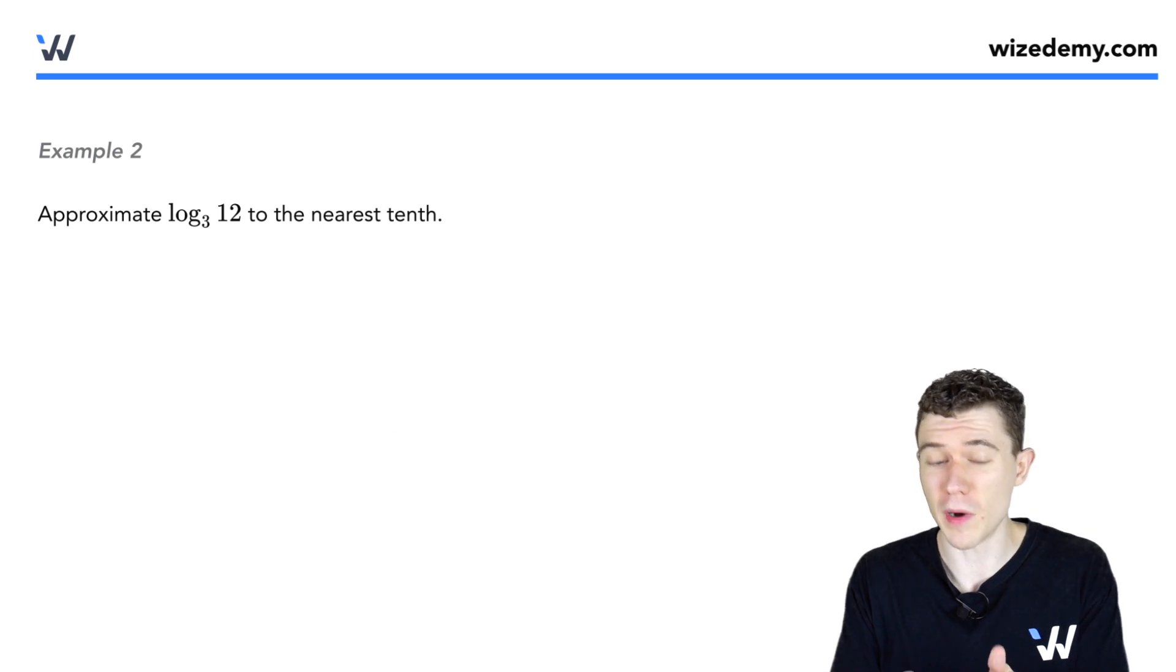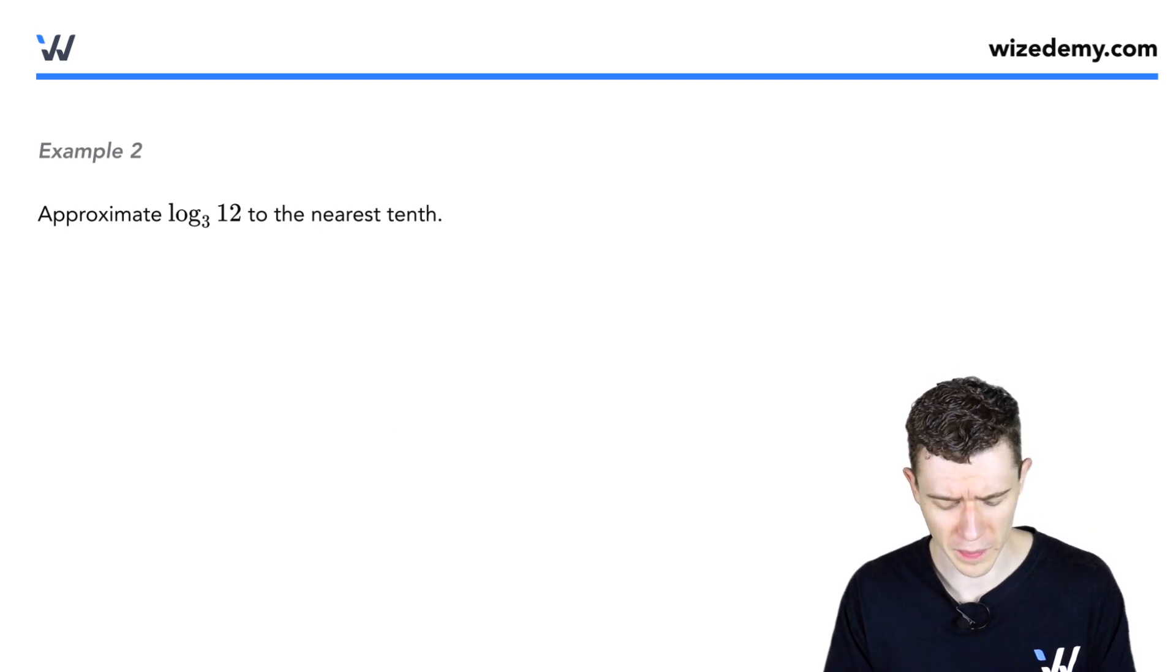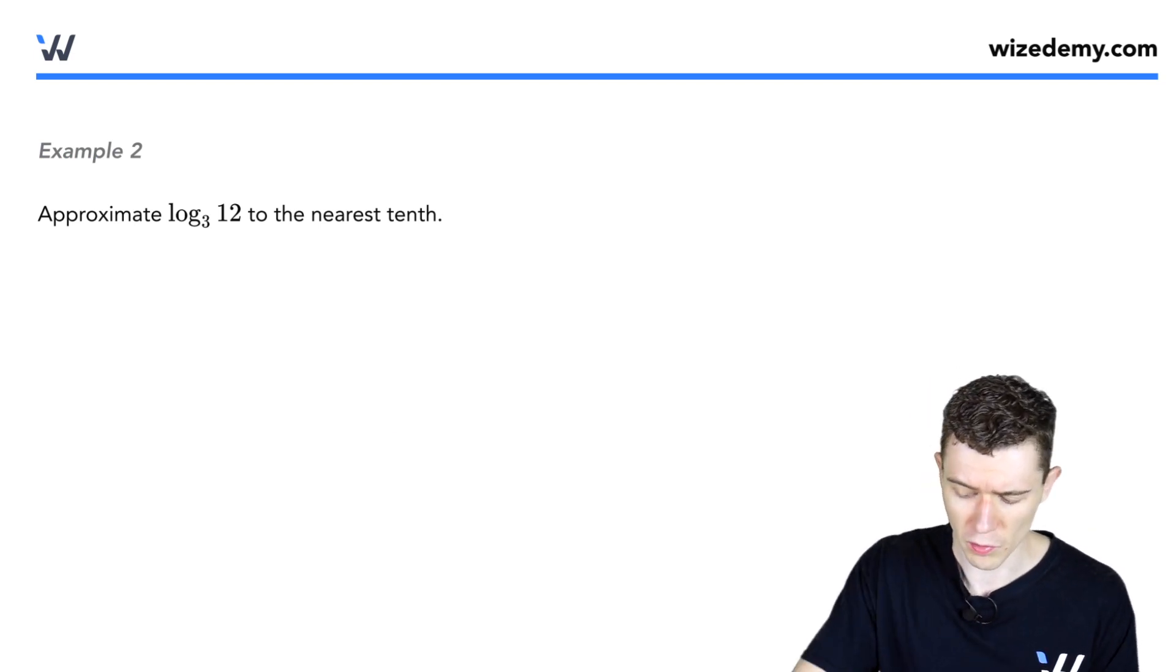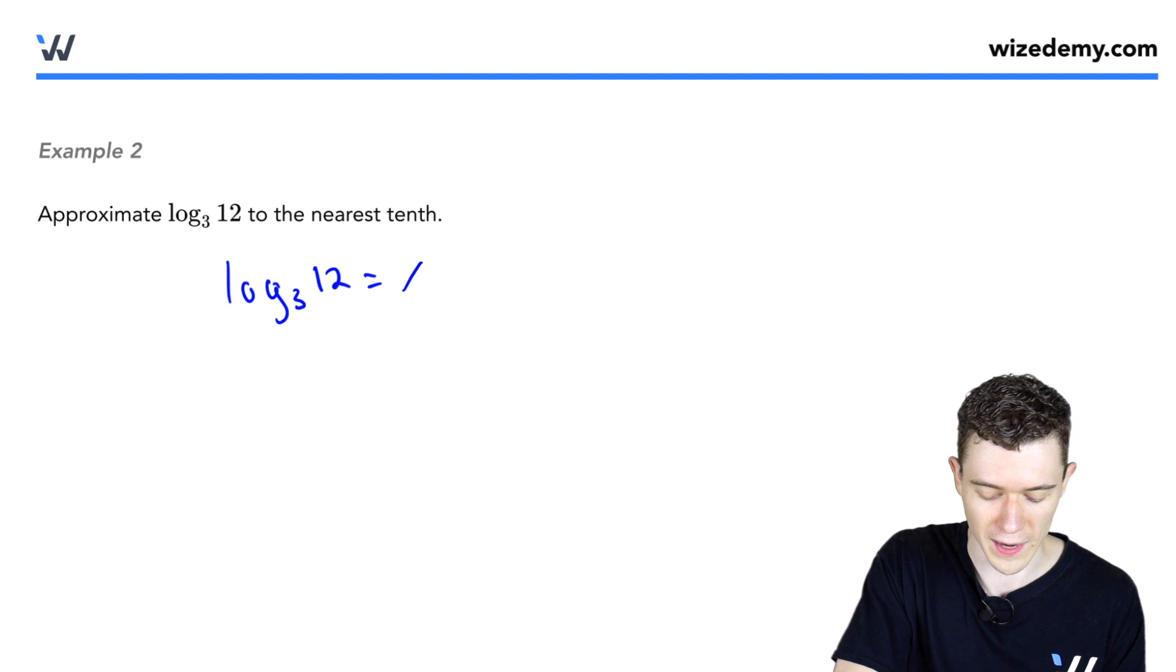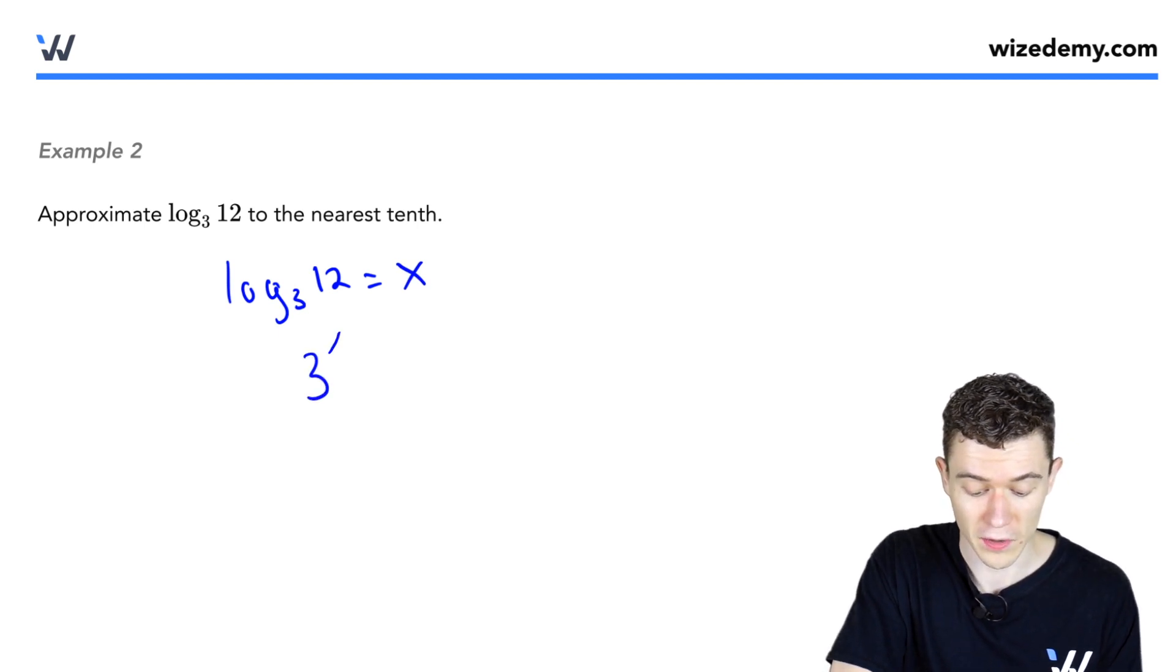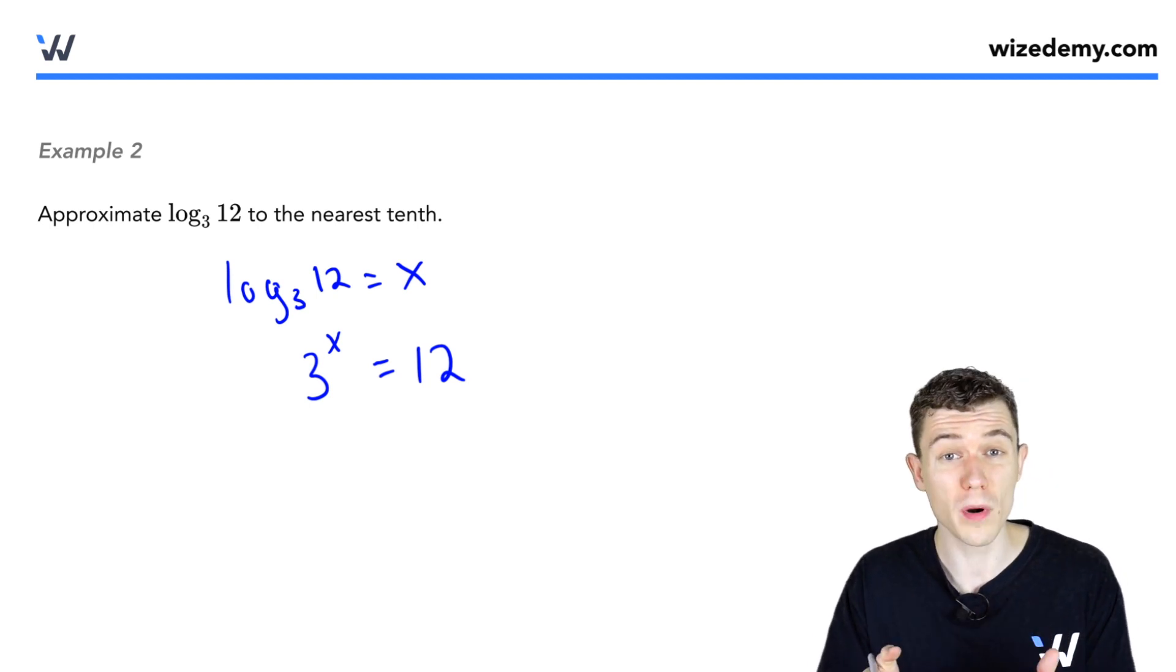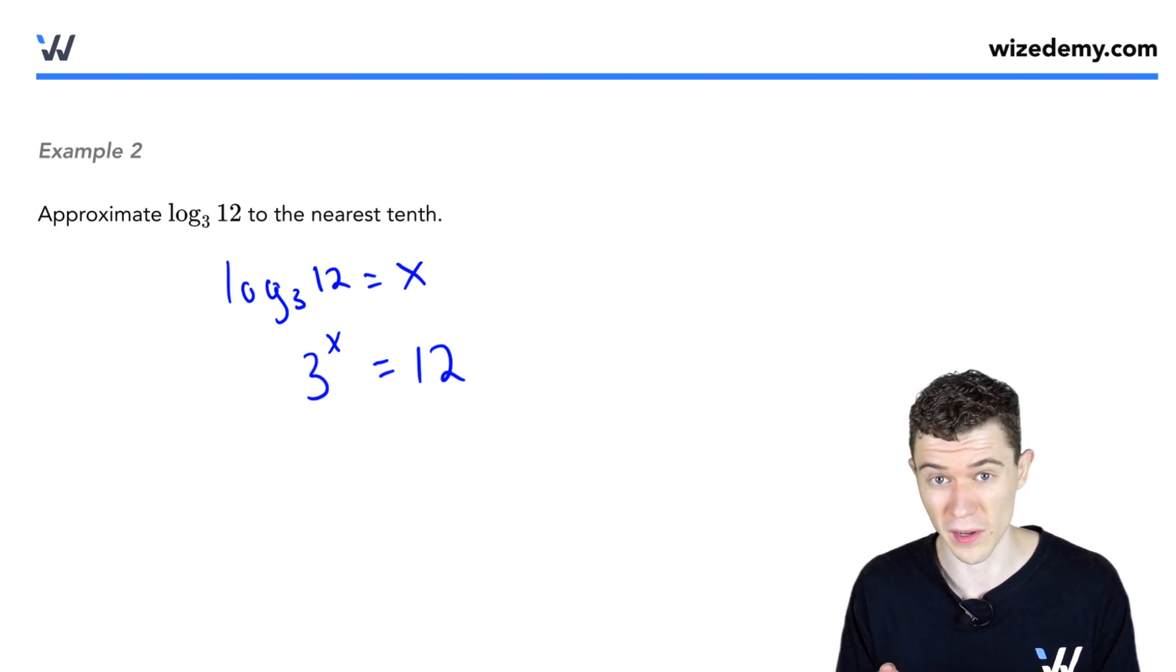Here's kind of a tricky question. Can we approximate log base 3 of 12? Remember what this really means. If log base 3 of 12 equals x, this means the same thing as 3 to the x power equals 12. In other words, what power of 3 would give us 12?